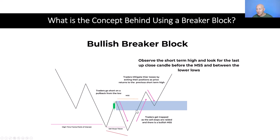The market pulls back and it goes higher. When it takes out this short term high, we get our bullish market structure shift, and the traders who went short here now realise they're on the wrong side of the trade and that the market's going higher.